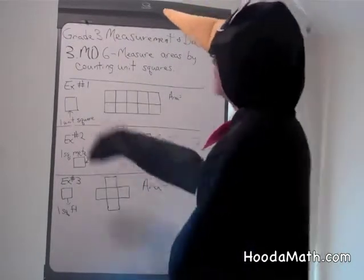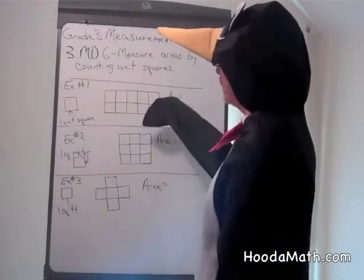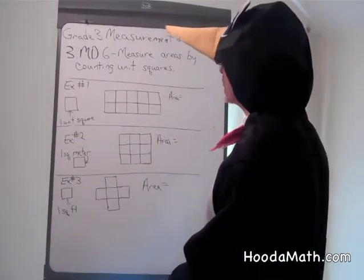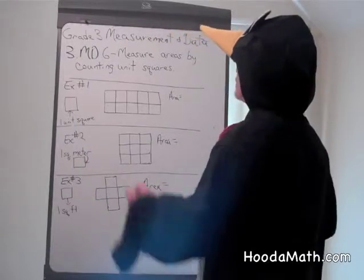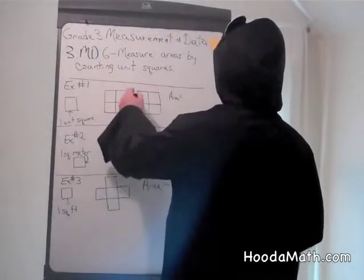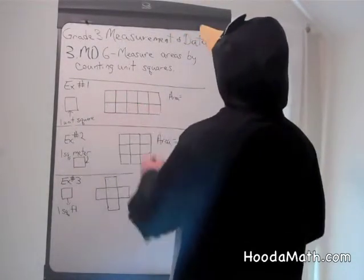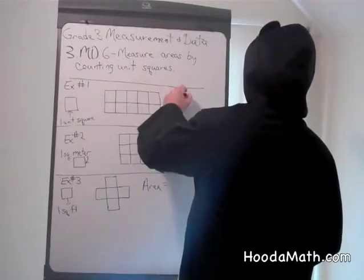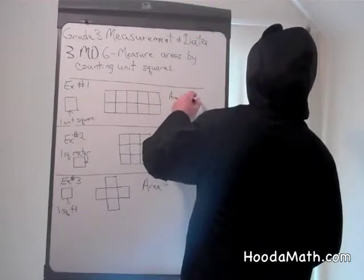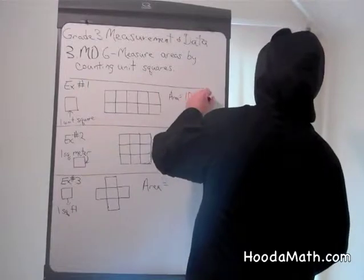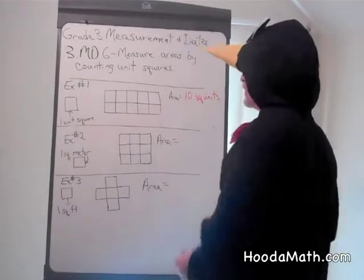In example one, this is a unit square, and this is a figure made from unit squares. So our area would be 1, 2, 3, 4, 5, 6, 7, 8, 9, 10, or our area is 10 square units, or 10 unit squares.